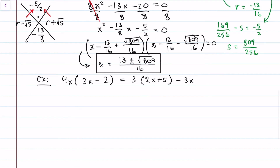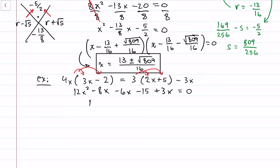I want to do one last example where something interesting will happen. Let's distribute everything and combine. We get 12x² - 8x, and moving everything over: subtract 6x, subtract 15, add 3x. Combining: 12x² - 11x - 15 = 0.